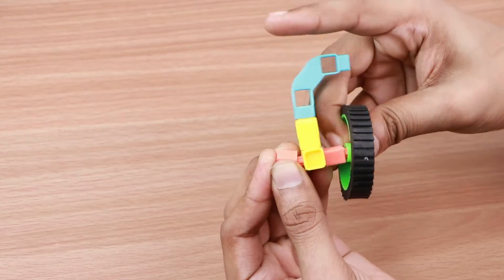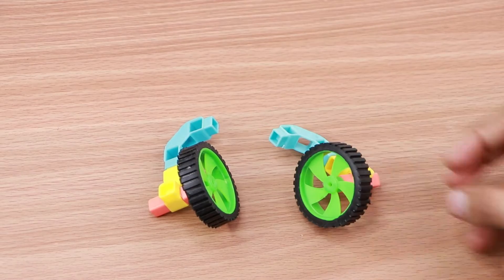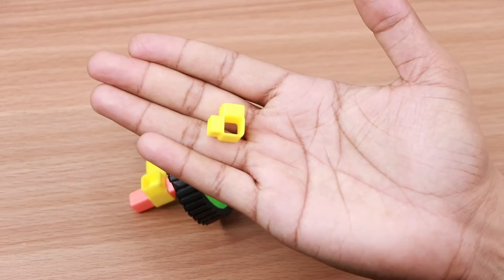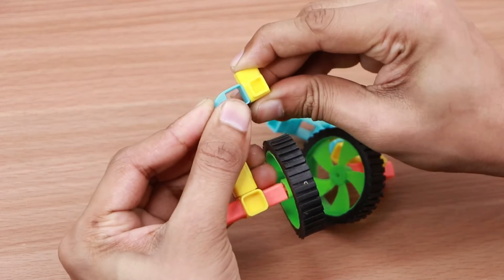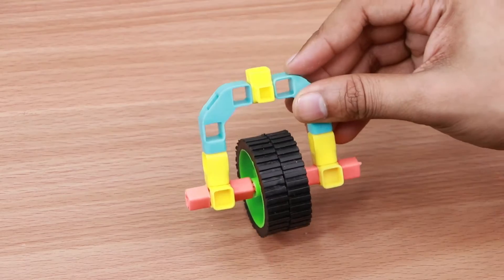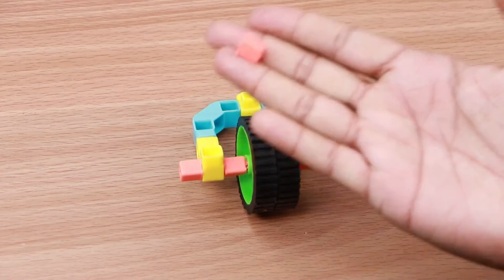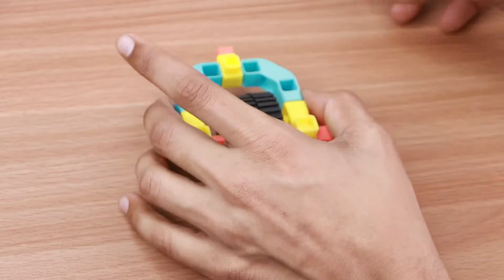Attach another BO shaft to the axle. Repeat this step to create another wheel assembly. Connect them together using a one-hole elbow. Now attach a BO shaft to the one-hole elbow. This completes the front wheel assembly.